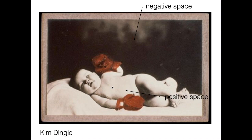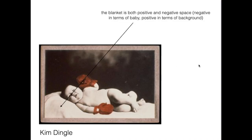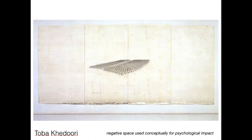So we mentioned the background being negative space and the figure being positive space, but what about the blanket? The blanket is both positive and negative space — it's negative in terms of the baby, because it's the space not being taken up by the figure, and positive in terms of the background and overall composition of the drawing. It's an example of negative space being used for psychological impact.